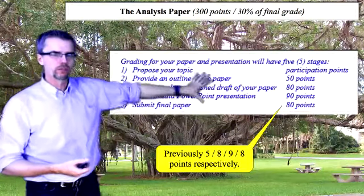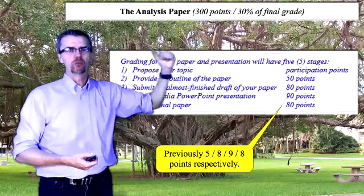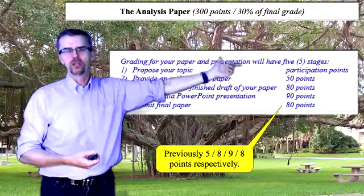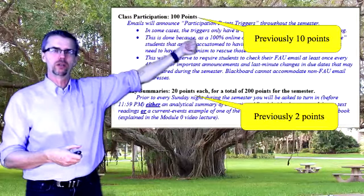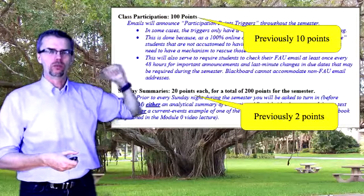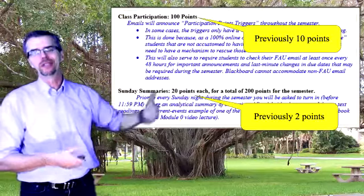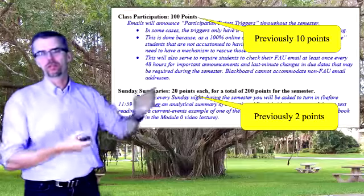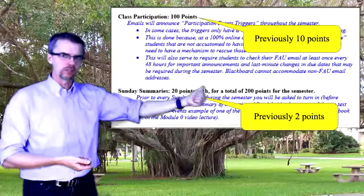Let me touch on why it's important that I grade the critical analysis paper in essentially five different elements, because there's a lot of participation points involved as well. The class participation points used to be 10 points and now they're 100 points. You'll see by the end of this video how you're going to have the opportunity to earn the rest of your participation points, because this is not a classroom-based class and I have to figure out another way to get you to participate online.